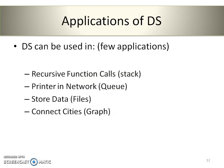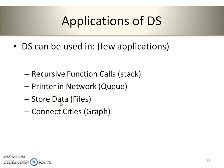Where can data structures be used? Here are a few applications. Whenever we call a function recursively, internally the stack data structure is used. Whenever we use a printer in a network, the queue data structure is used. Usually when we store data, the file data structure is used. And the graph data structure is used to connect different cities. These are some real-time examples where data structures are used.